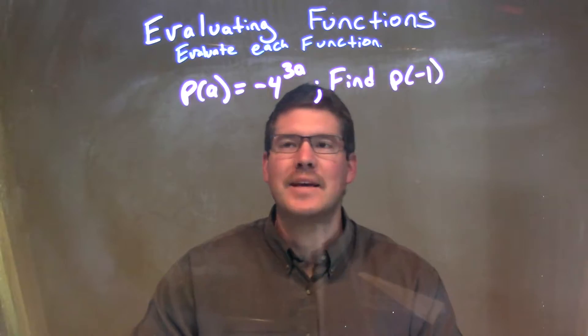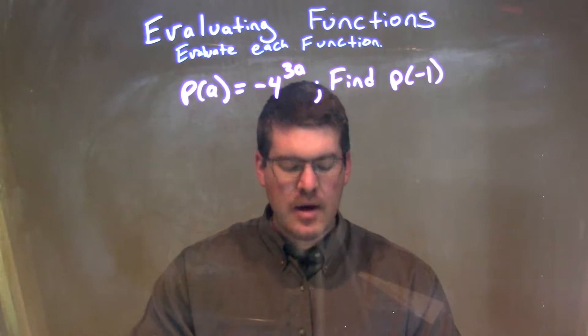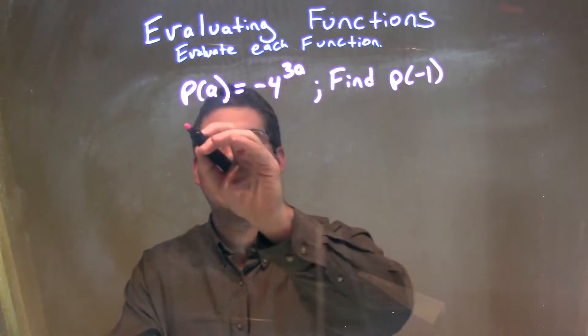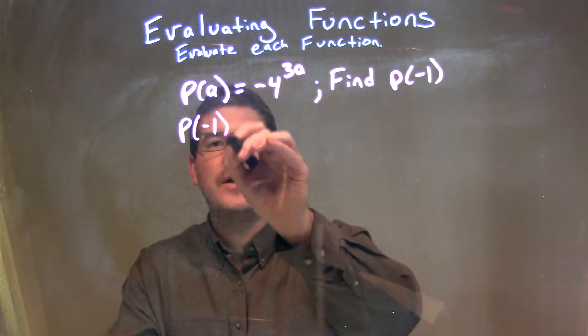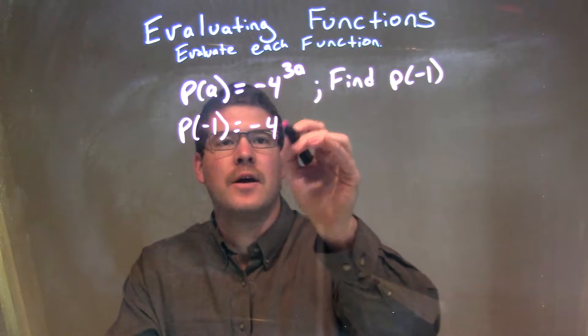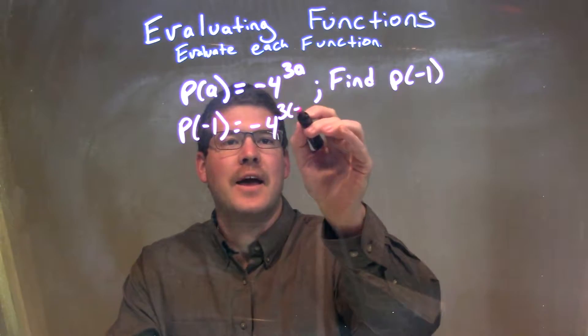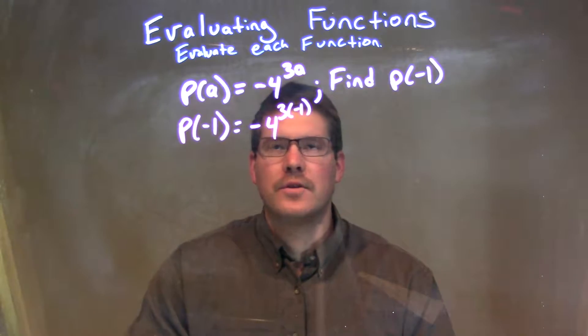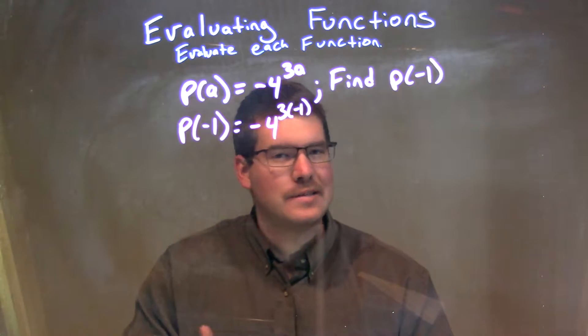We're going to find P of negative 1. Well, every single time I see an A, I need to plug in a negative 1. So we have P of negative 1 right here is equal to negative 4 times 3 to the negative 1 power. Or 4 to the power of 3 times negative 1, better way to say it.